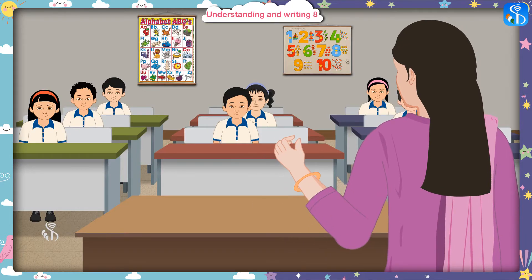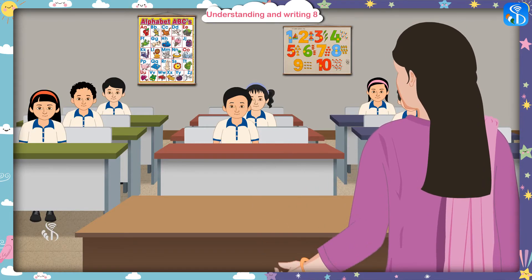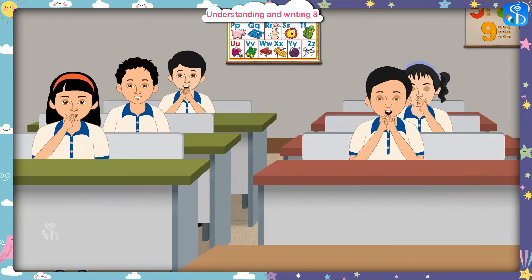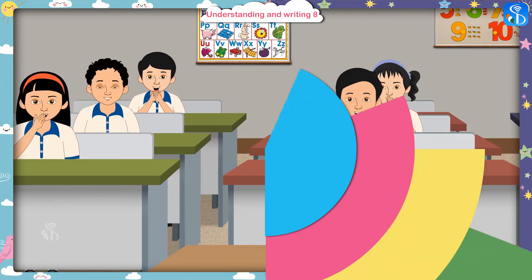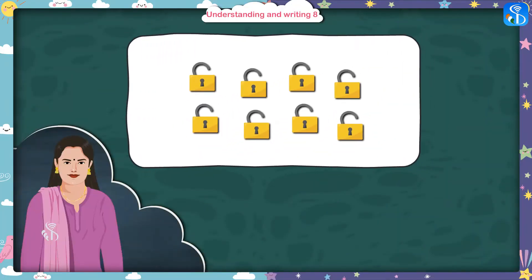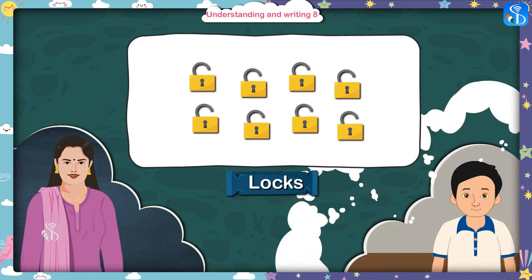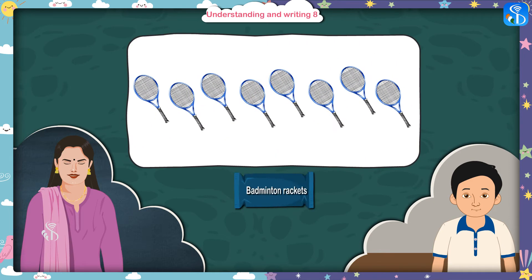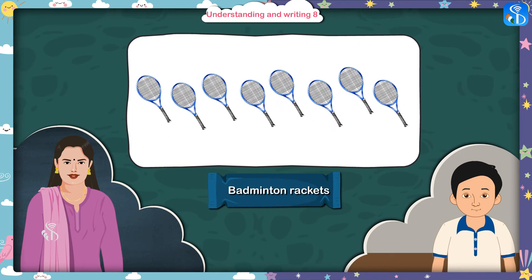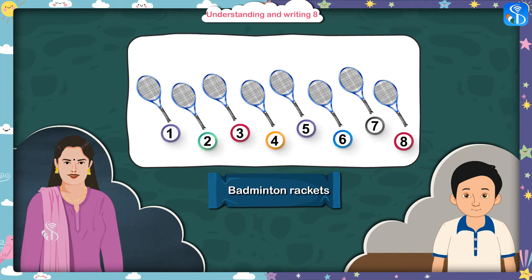An umbrella has 8 spokes. Children, there are some locks in this picture. Can you tell me how many locks there are? Madam, there are 8 locks. Correct. Now tell me, how many badminton rackets are there in this picture? There are 8 badminton rackets here, madam. Correct.